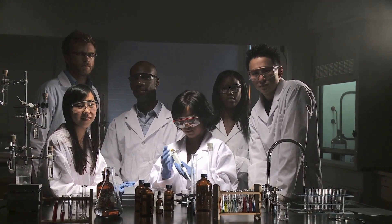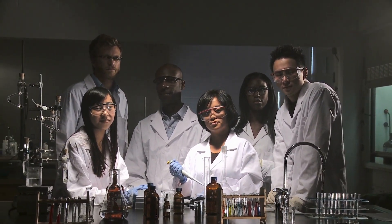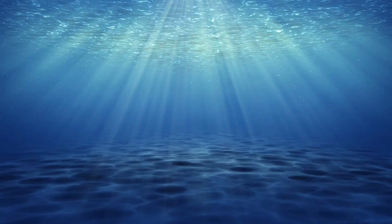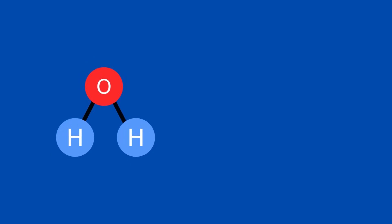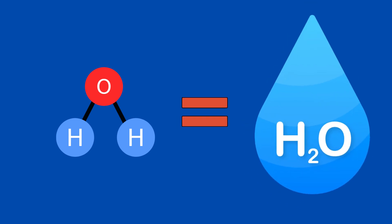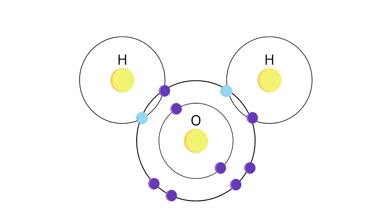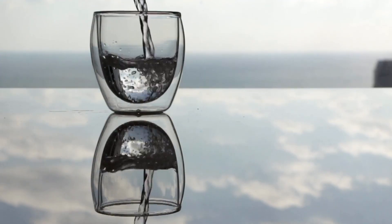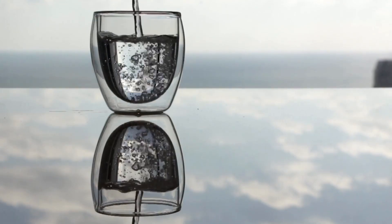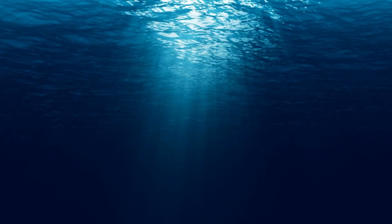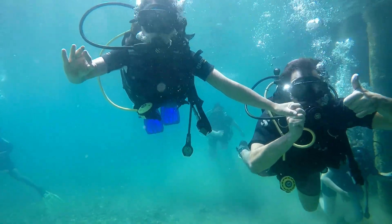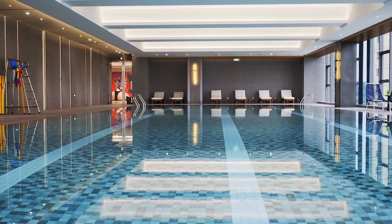Now, you can don your lab coats and let's dive into the science of it all. When light waves pass through a medium like water, they can interact with the atoms and molecules present in it. Water molecules are composed of two hydrogen atoms and one oxygen atom, and they have a unique molecular structure that makes them transparent. The electrons in a water molecule are arranged in a way that makes them symmetrical, which means that they don't absorb light of any particular wavelength. When light waves pass through a water molecule, they don't get absorbed or scattered, which allows them to pass through the water without any hindrance. This is why water appears clear and transparent to the naked eye — the light waves pass through it without any distortion, allowing us to see through it.